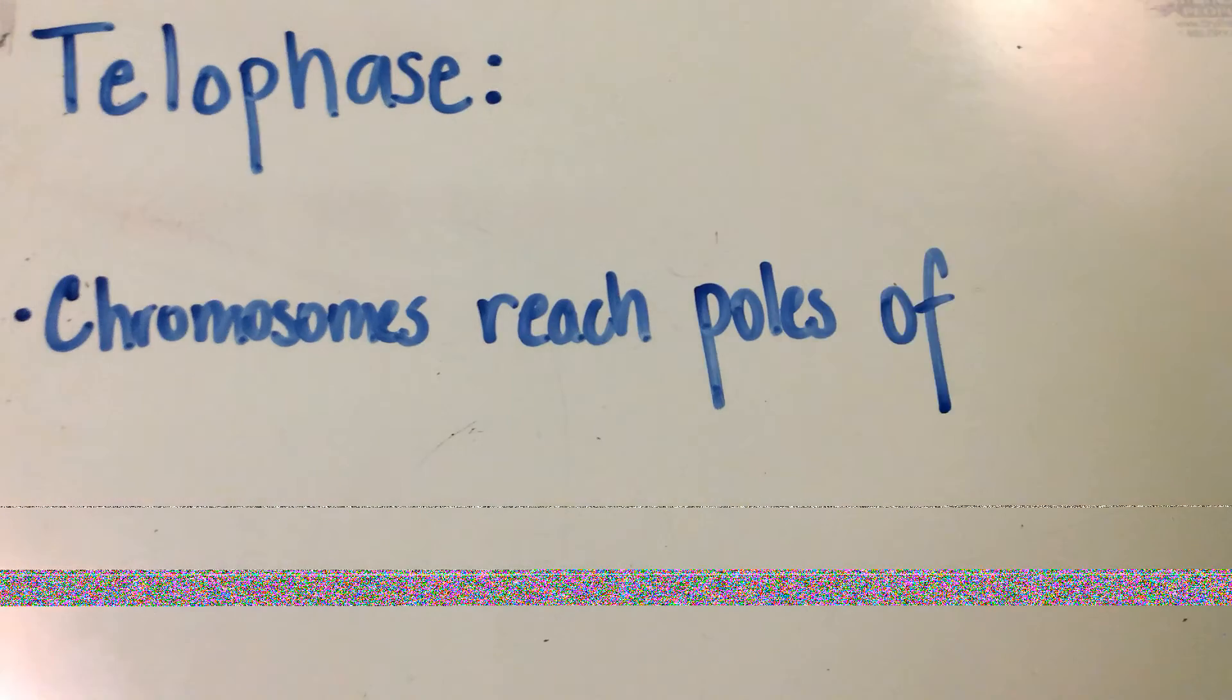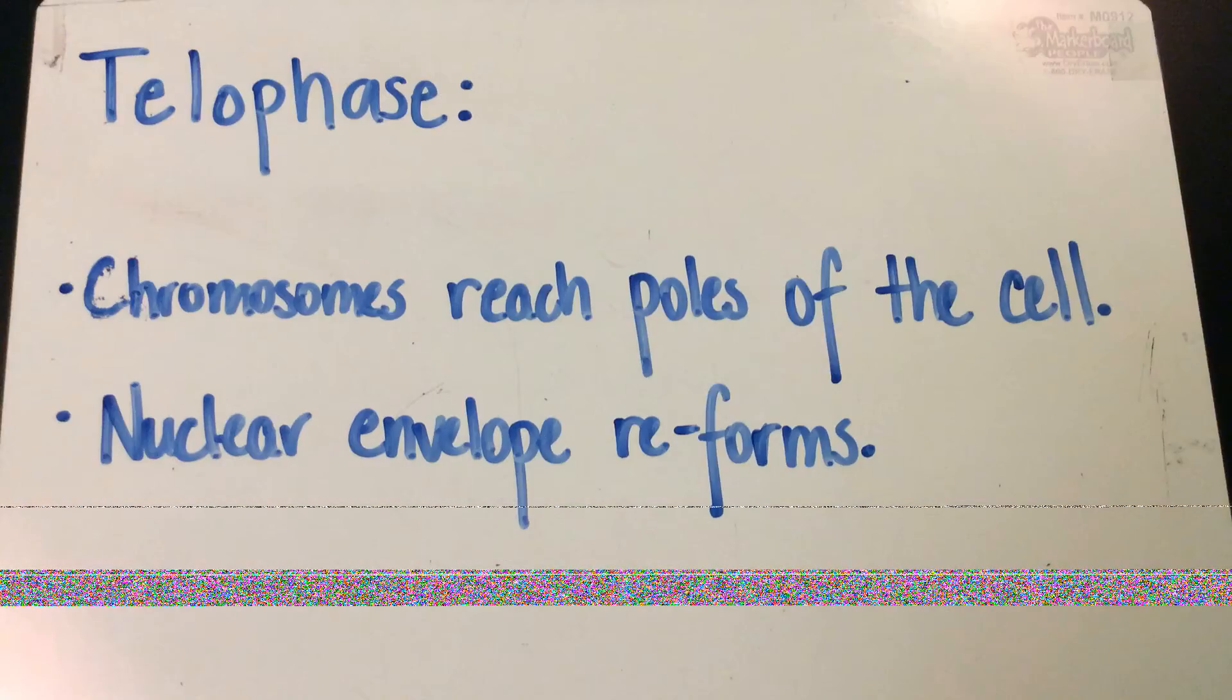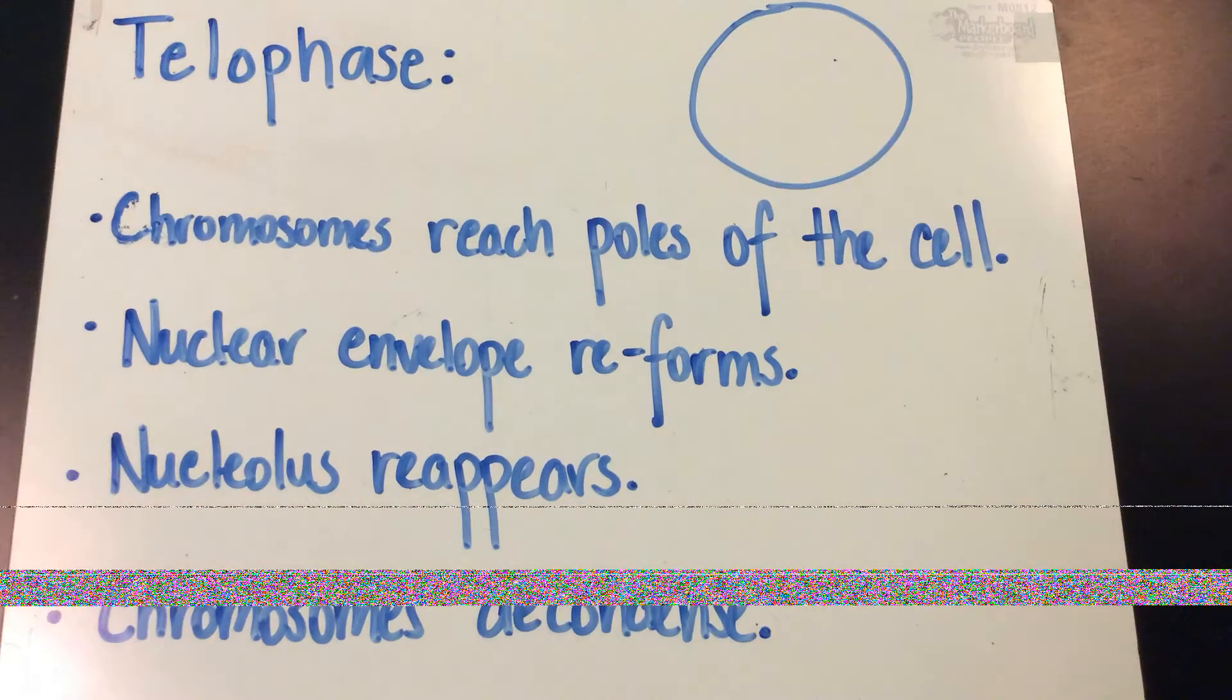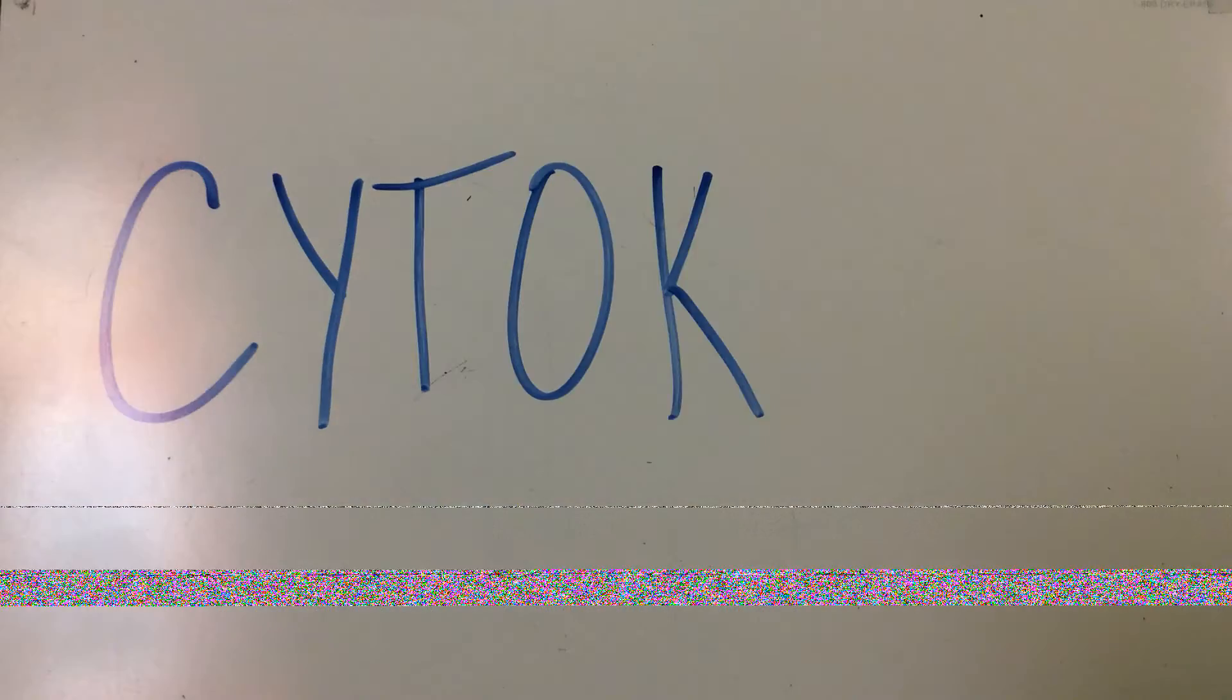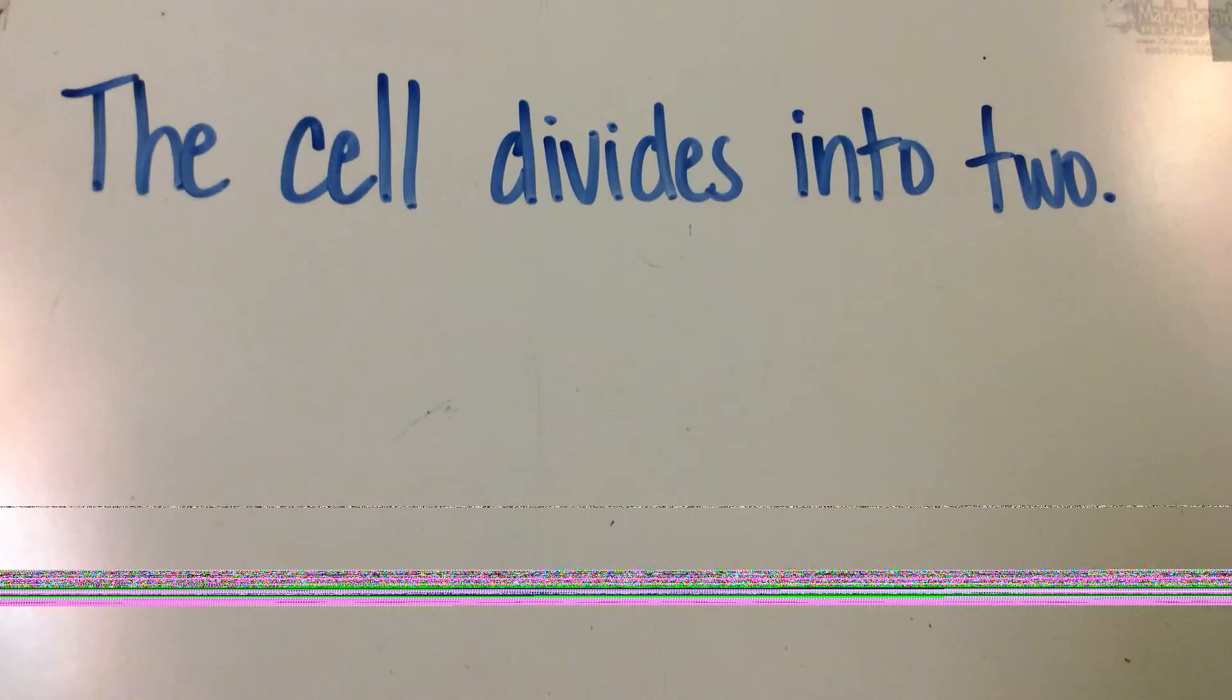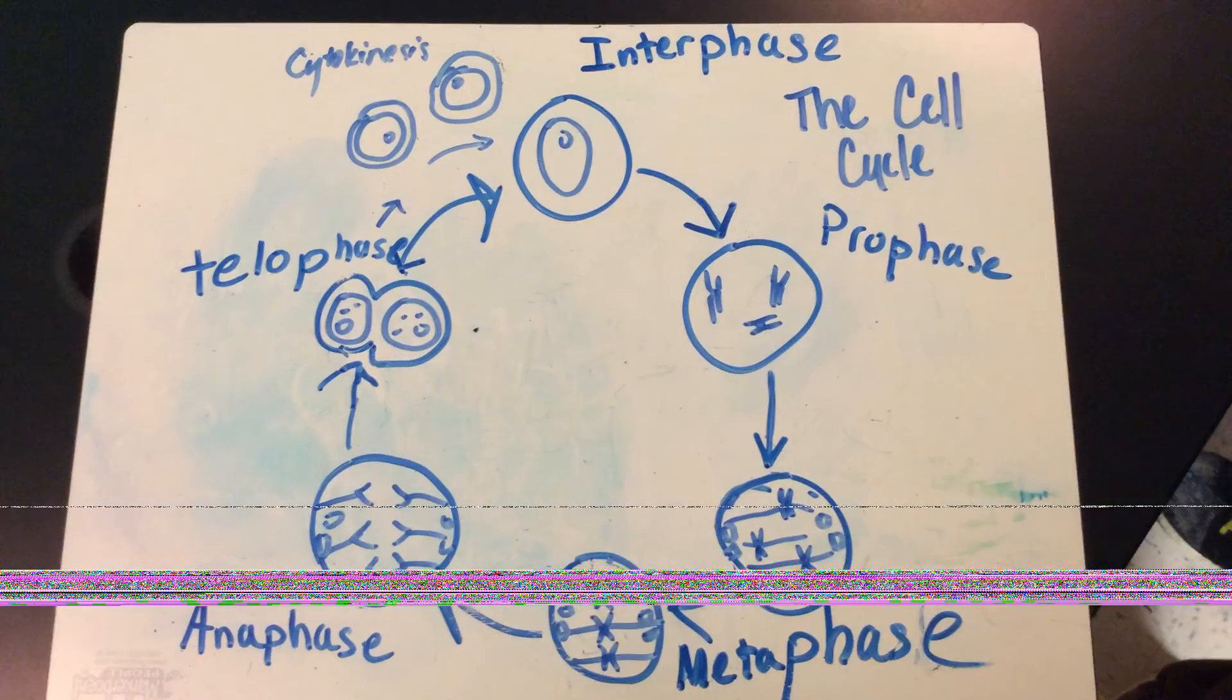Telophase: chromosomes reach the poles of the cell, nuclear envelope reforms, nucleus reappears, and chromosomes decondense. Cytokinesis is where the cell divides into two, and that's the cell cycle.